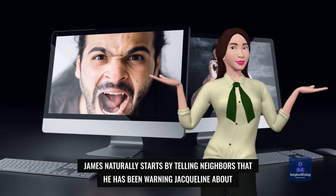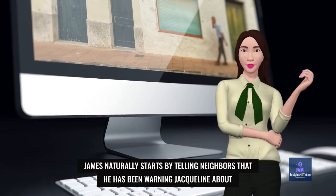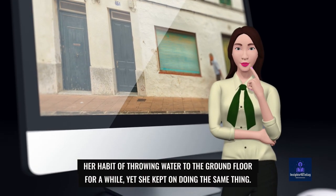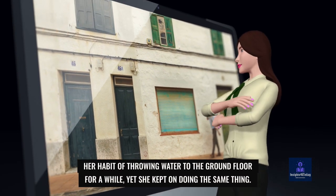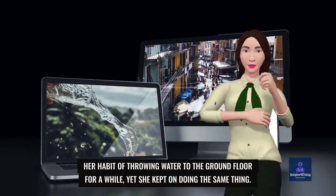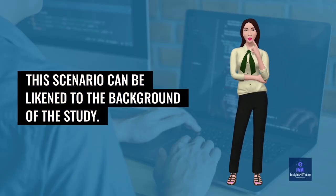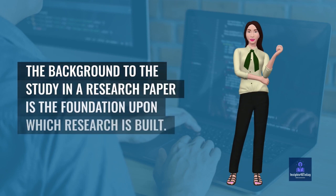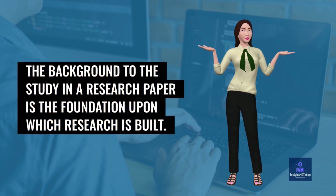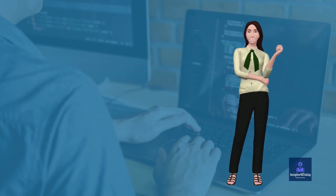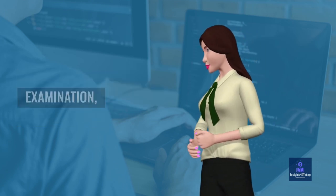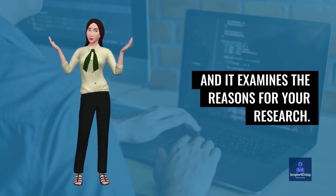Exactly. James naturally starts by telling neighbors that he has been warning Jacqueline about her habit of throwing water to the ground floor for a while, yet she kept on doing the same thing. This scenario can be likened to the background of the study. The background to the study in a research paper is the foundation upon which research is built. It focuses on the incidents before your examination, and it examines the reasons for your research.